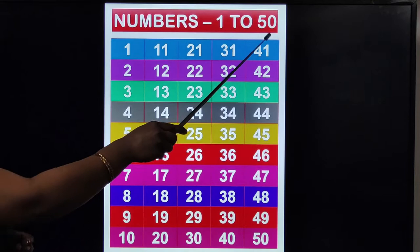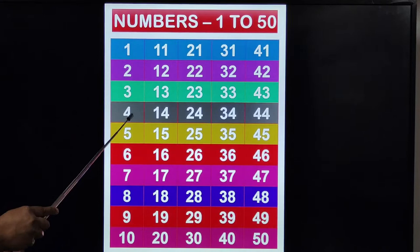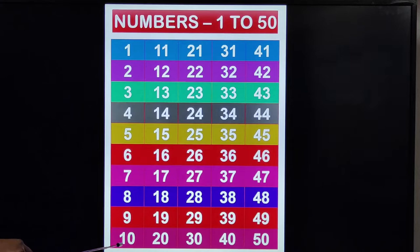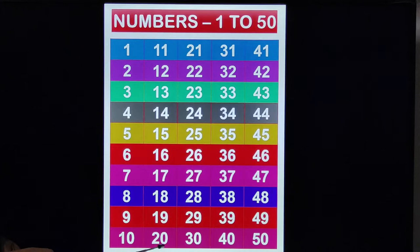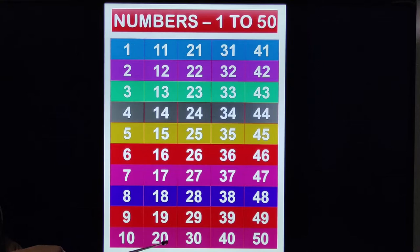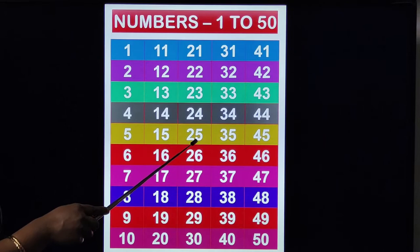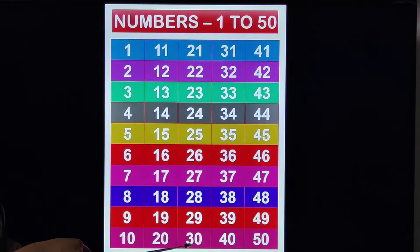Before starting today's class, let's repeat once again numbers 1 to 50. 1, 2, 3, 4, 5, 6, 7, 8, 9, 10. After 9, two-digit number 10 — 1, 0. After 10: 11, 12, 13, 14, 15, 16, 17, 18, 19, 20. After 19: 2, 0 — 20. Then 21, 22, 23, 24, 25, 26, 27, 28, 29, 30.